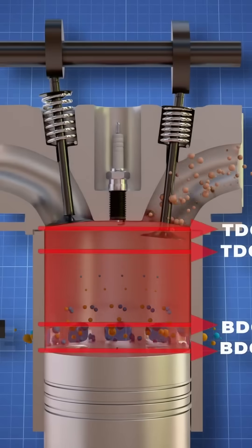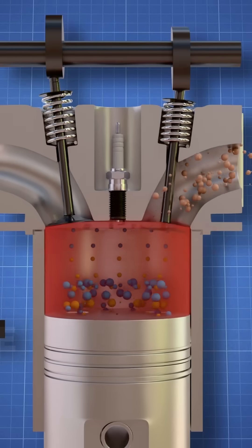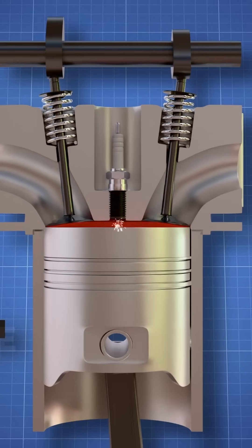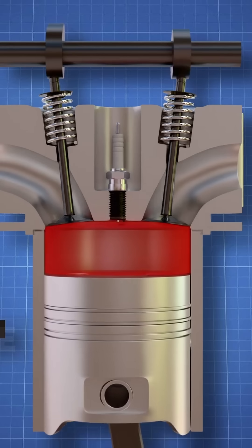As the piston moves up, it closes the intake port and compresses the air-fuel mixture. As it reaches TDC again, a spark is ignited resulting in the second power stroke.